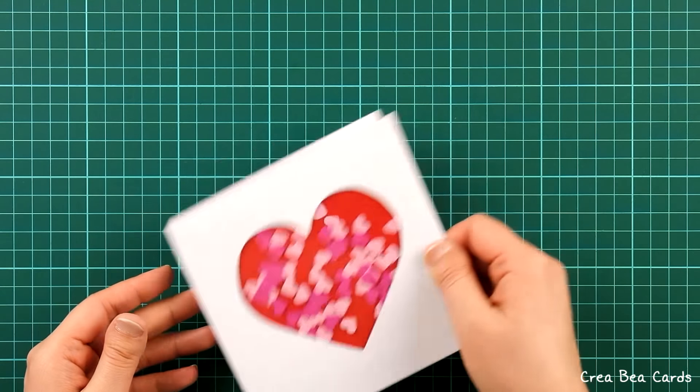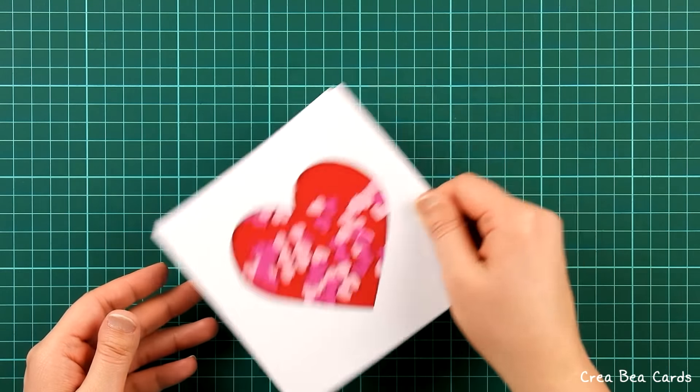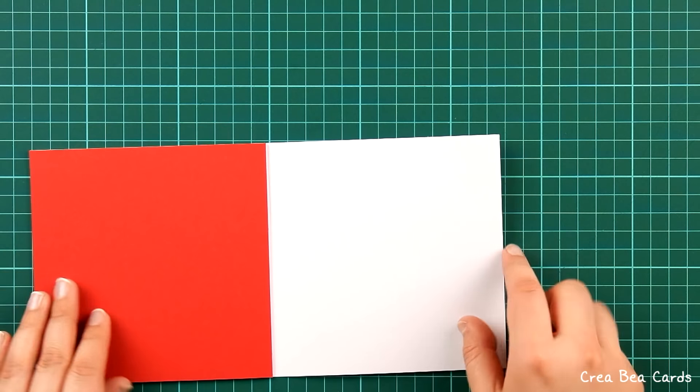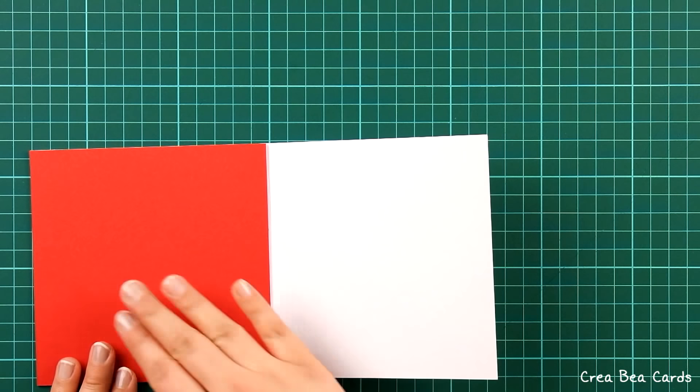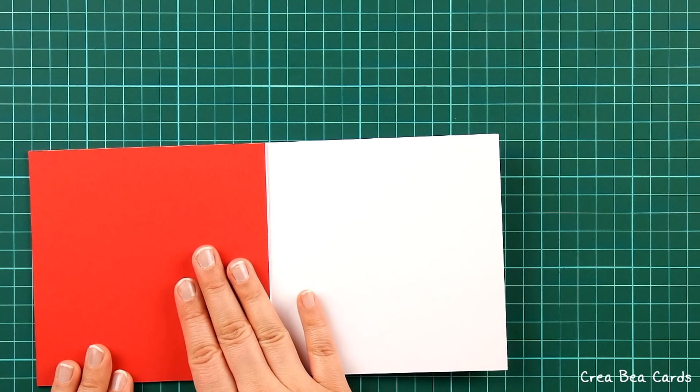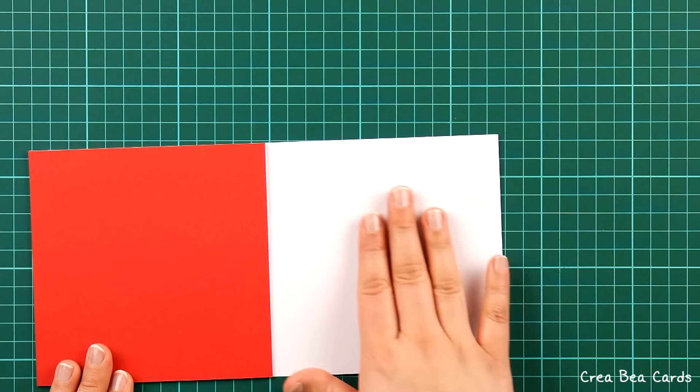Your shaker card is ready now for a lovely message. For example, you could include a love quote on the inner red card side and a personal message on the inner white card side.